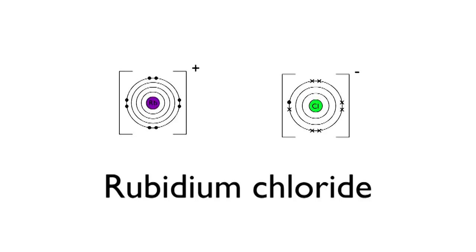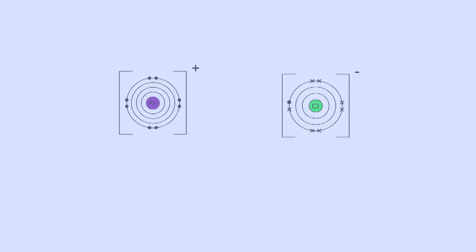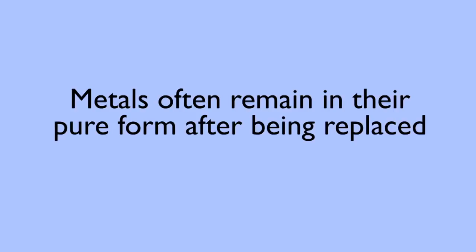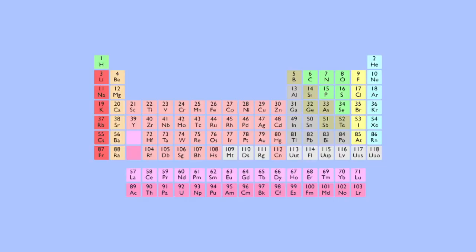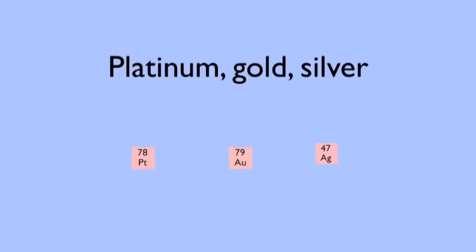Often when the species displaced is a metal, it stays just as it is, a pure metal. This can actually be very useful because some of the less reactive and easily displaced metals are the precious ones like platinum, gold, and silver. So there can be value in displacing these from their ionic compounds or solutions.